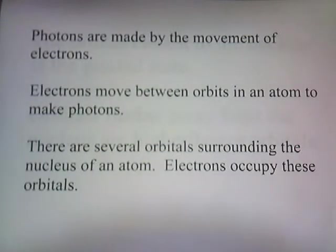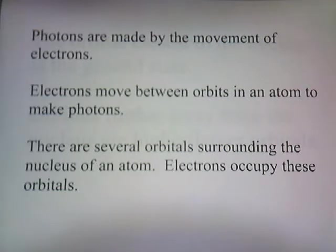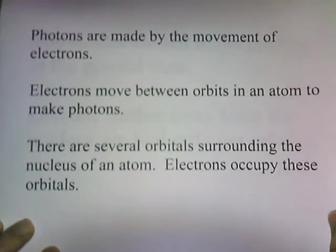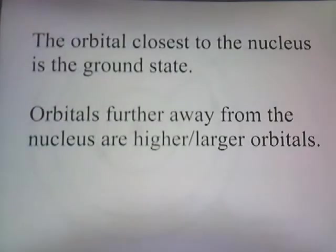Photons are made by the movement of electrons. Electrons move between orbits in an atom to make photons. There are several orbitals surrounding the nucleus of an atom. Electrons occupy these orbitals, and the orbital closest to the nucleus is the ground state. Orbitals further away from the nucleus are higher or larger orbitals.